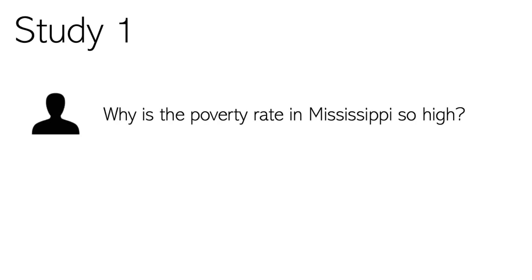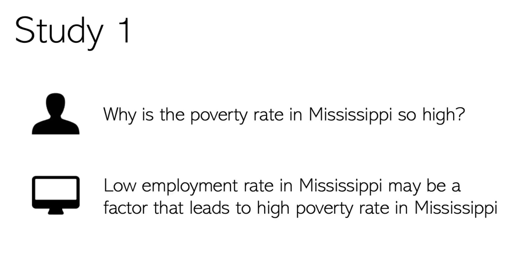In Study 1, we presented participants with a series of why questions and answers to those why questions. For example, the why question might be: Why is the poverty rate in Mississippi so high? And the system's answer might be a causal claim like: low employment rate in Mississippi may be affected, leading to high poverty rate in Mississippi.